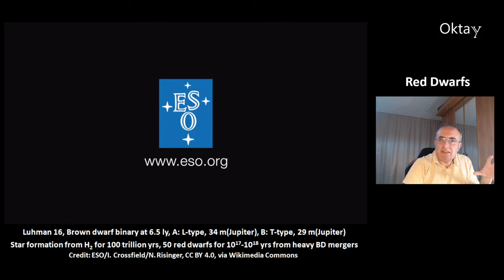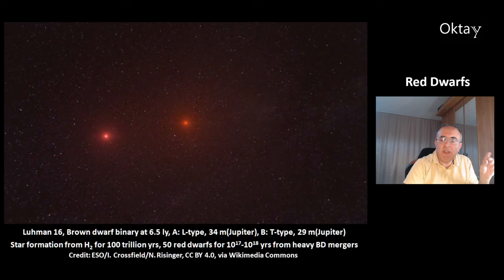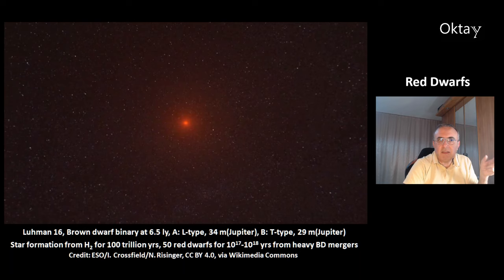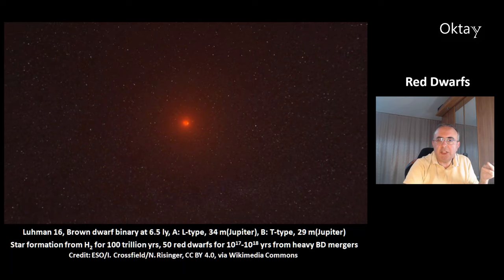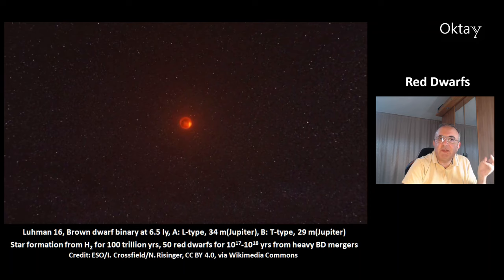This is an animation of the nearby brown dwarf binary system Luhman 16, at 6.5 light years distance. One of the brown dwarfs is an L-type with 34 Jupiter masses, and the other — Luhman 16B shown in the picture — is a T-type with 29 Jupiter masses.